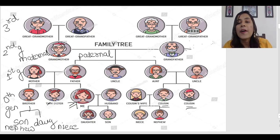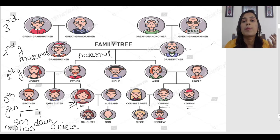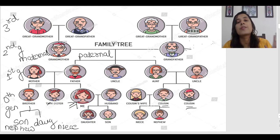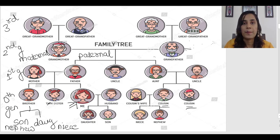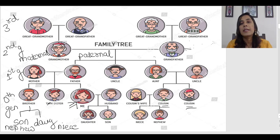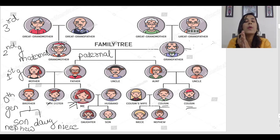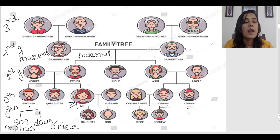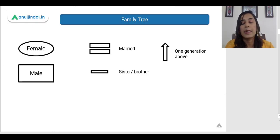So this entire thing is called a family tree. Whenever we are dealing with problems related to blood relations, we are going to construct a family tree to find out who is what. Please spend some more time on this slide if you are not clear, because this is very basic and we are going to use it in nearly each problem related to blood relations. Now let us see another slide.